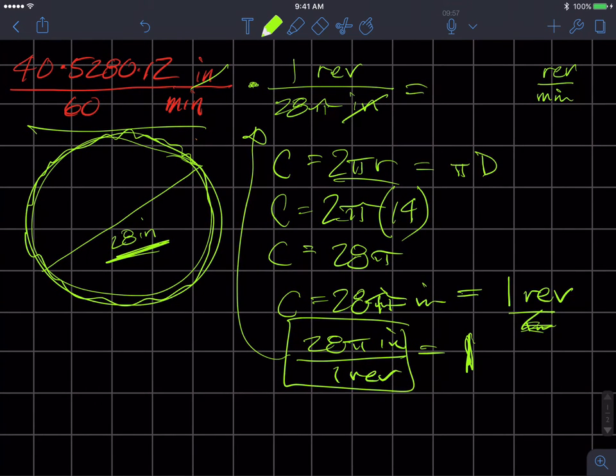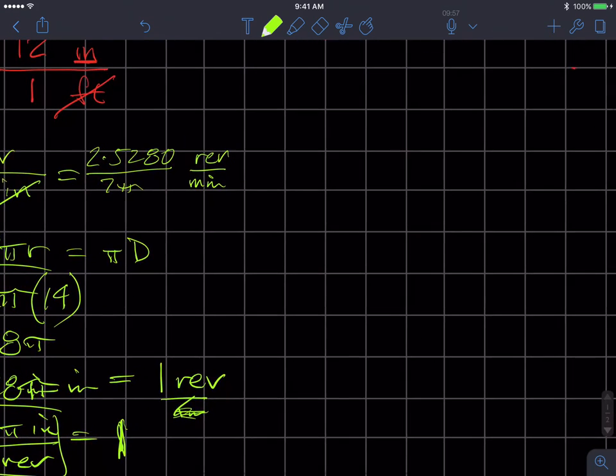So, now I have to simply do this math. 40 times 5,280 times 12 divided by 60 times 1 divided by 28 pi. Now, I'm lazy, so I'm going to try to simplify fractions before I get there. So, I can divide 40 by 10. That leaves 4. Divide this by 10. That leaves 6. Divide this by 6. That leaves 1. Divide this by 6. And that leaves 2. Divide this by 4. That leaves 1. Divide this by 4. That's 7. And so, now I have 2 times 5,280 divided by 7 pi. And so, that makes my arithmetic, I believe, quite a bit easier.